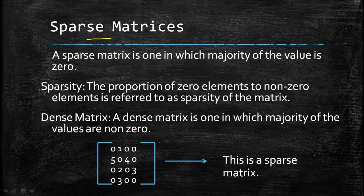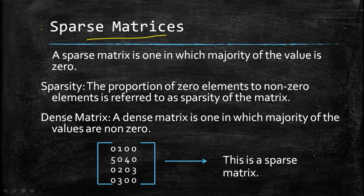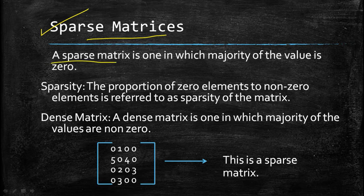We will now see sparse matrices. We already know what a matrix is — matrices are rectangular arrays of numbers arranged in rows and columns. We have already done matrix programs in C programming, so we know what a matrix is. Now we need to know what a sparse matrix is.